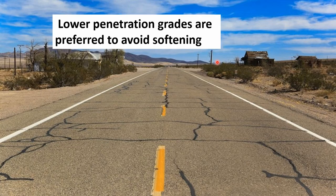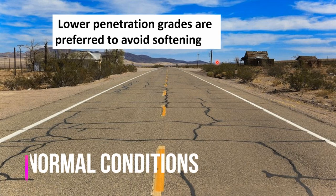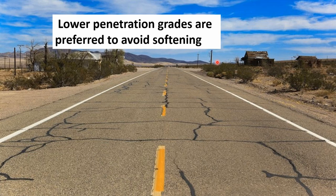When it comes to 80 by 100 grade bitumen, it is the most commonly used grade for pavement construction. It can be used in normal conditions where the temperature is not too high or not too low.